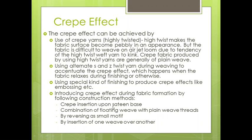The construction methods for producing crepe during fabric formation are: crepe insertion upon a certain base weave; combination of floating weave with plain weave threads; reversing a small motif; and insertion of one weave over another. In all four methods, the common goal is to produce an irregular effect during fabric formation.